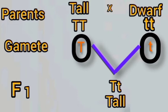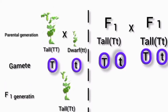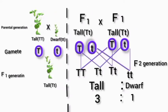Capital T is expressing in the first generation, but small t is not able to express in the presence of capital T. Mendel then self-crossed the F1 plants (Tt). The F1 plants produce 50% pollen with T and 50% with t, and 50% eggs with T and 50% eggs with t. In the F2 generation, tall and dwarf appear in a three-to-one ratio.